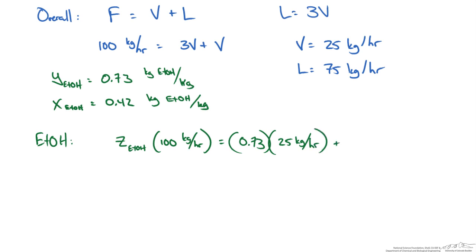This is plus our liquid mass fraction 0.42 times our liquid mass flow rate. So when we solve for the mass fraction of ethanol in our feed stream we get 0.498 or 0.5 kg ethanol per kg. So this suggests that we have an equal mass mixture of ethanol and water coming into our condenser.